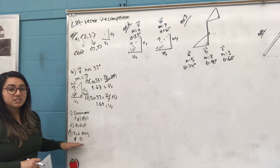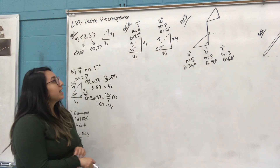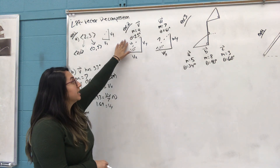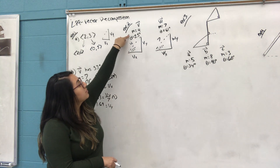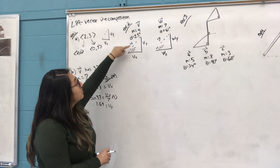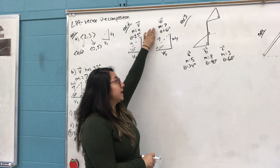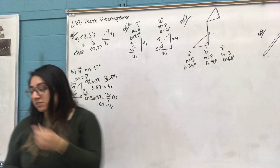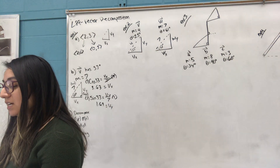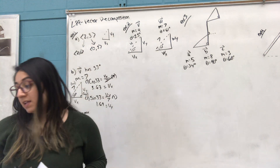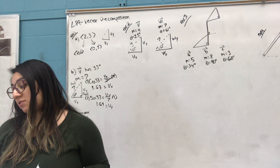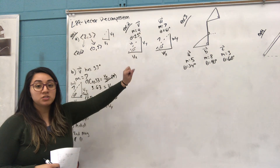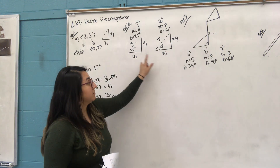Example 2: we have two different vectors, V and W. Theta just means the indicated degree. Vector V has a magnitude of 4 (the hypotenuse) and a degree of 25. Vector W has a magnitude of 7 and a degree of 61. The problem asks us to add the vectors by decomposition and find the magnitude and angle the resultant vector makes with the horizontal. First we need to find the X and Y of each vector.